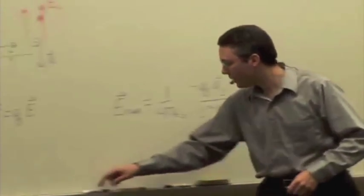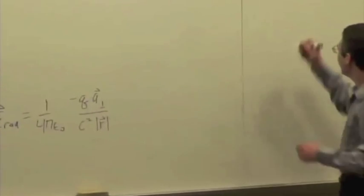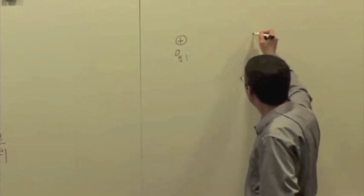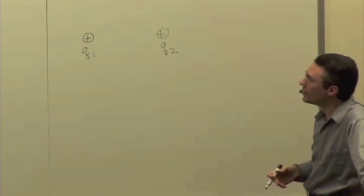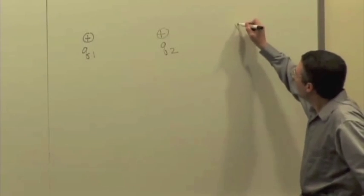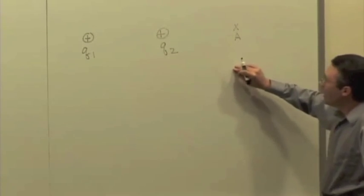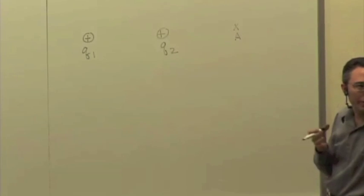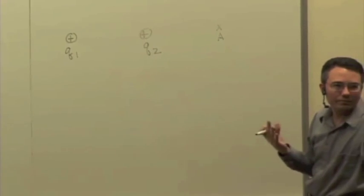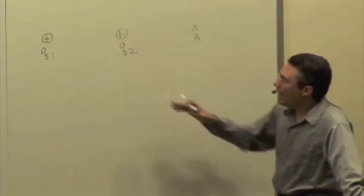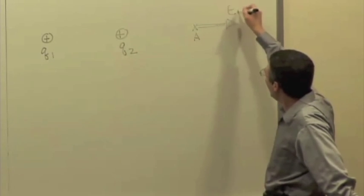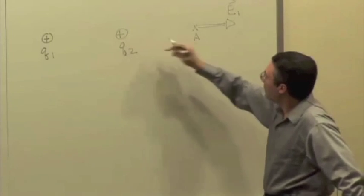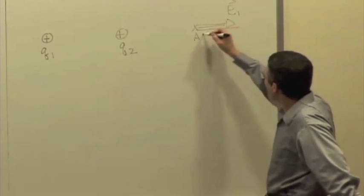But we said that the superposition principle says that if I have sources of electric field due to two different charges, and they don't have to be accelerating, just any electric fields, the superposition principle says that if I'm looking at some observation location, I have to add up the electric fields due to all the charges in the universe. And here's charge one. So charge one would have an electric field pointing in that direction, called E1.